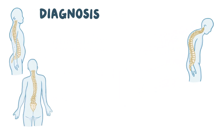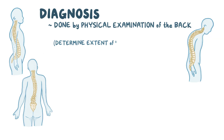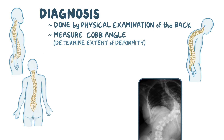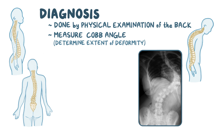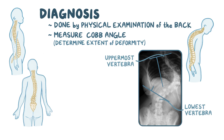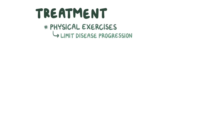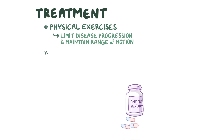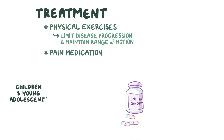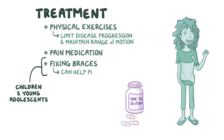The diagnoses for lordosis, kyphosis, and scoliosis are done by physical examination of the back. To figure out the extent of the spinal deformity, the Cobb angle can be measured — that's the measurement between two lines drawn perpendicular to the upper border of the uppermost vertebra and the lower border of the lowest vertebra involved in the curvature. In addition, radiographs of the back can be taken as well. Treatment typically includes physical exercises to limit disease progression and maintain the range of motion, as well as pain medication when needed. For children and young adolescents, fixing braces can sometimes help prevent further spinal deformity. In rare situations, surgery may be needed.